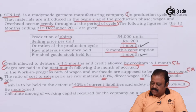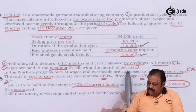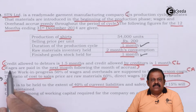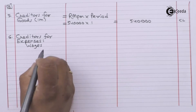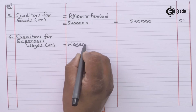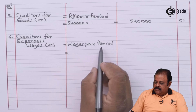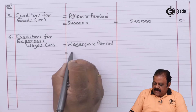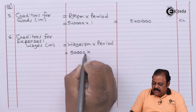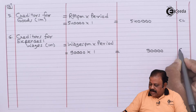Creditors for expenses: wages are paid in the next month following the month of accrual. This is the information for arrears of wages — time lag in payment of wages — which will be part of current liability. Wages per month rupees 90,000 multiplied by period of one month equals rupees 90,000. This will be part of current liability. So we have calculated current assets as well as current liabilities; let us prepare the final statement of estimated working capital.